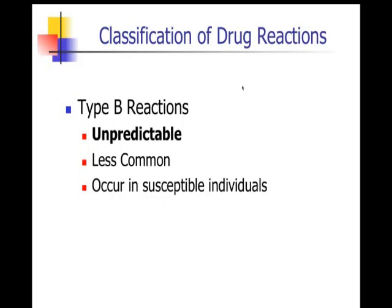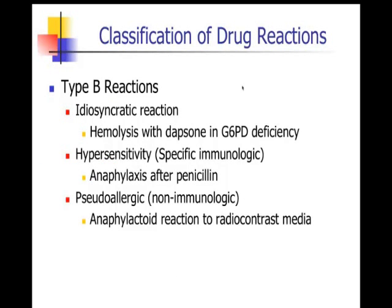Type B reactions are what we'll be talking about. These are unpredictable, occur in a small subset of patients, and may have something to do with the host itself. Not all type B reactions are considered allergic — for example, hemolysis in patients with G6PD deficiency taking dapsone would not be considered drug allergy, but is indeed a type B unpredictable reaction. We're going to be talking about hypersensitivity reactions and pseudo-allergic reactions.